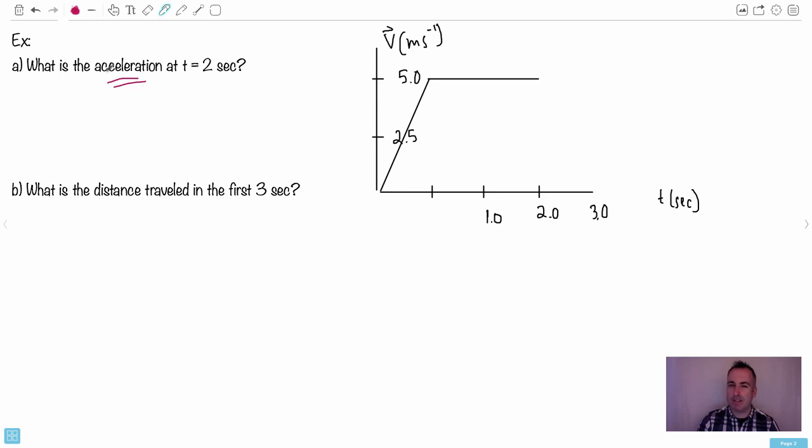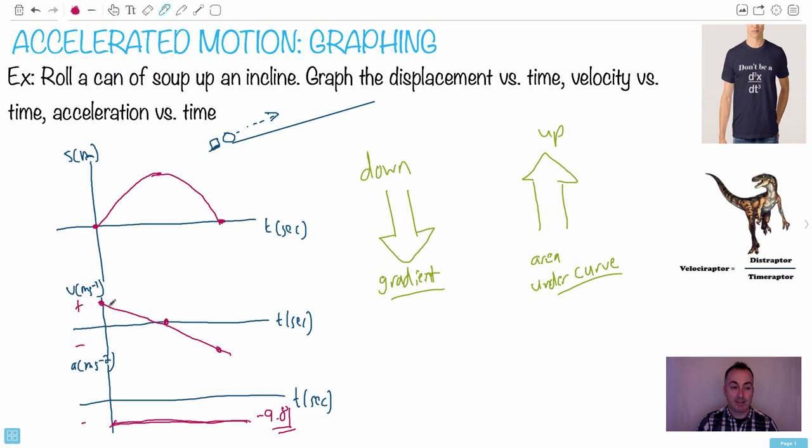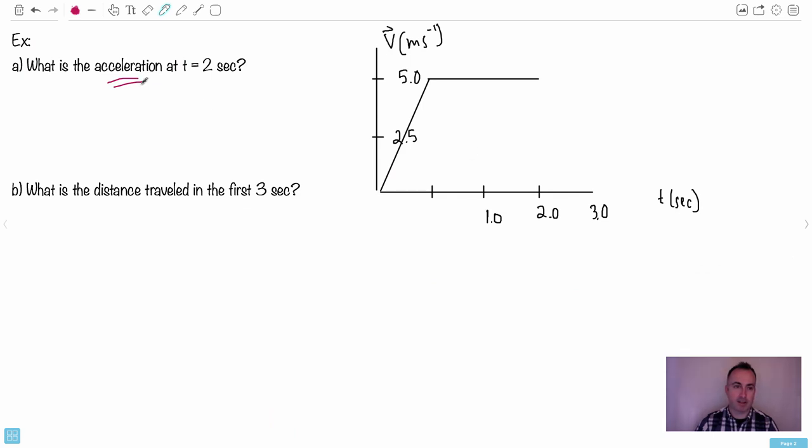Think about this - acceleration, how is it related to velocity? Go back to the little trick. You're given velocity, if you want acceleration, you're going down, aren't you? If you go down, you take the gradient. That's how you know to take the gradient of this graph. So at two seconds, when I do this, the gradient right here - if I drew a tangent line at two seconds, can you see that? It would be something flat, wouldn't it?